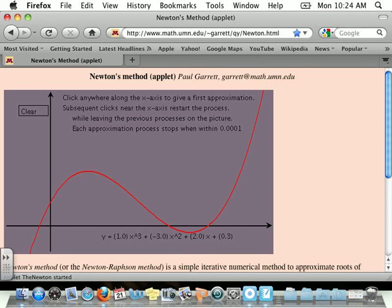Oh, I can see it on my screen, but I can't see it here. I'm going to turn off the lights. So this says click anywhere along the x-axis to give a first approximation. Subsequent clicks near the x-axis restart the process. So let's say I use this as my initial guess. Here's what it's doing. It's drawing in that first tangent line, finding that point there. It's going up and drawing the next one.